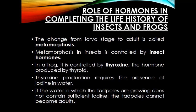As we studied in chapter 9, frogs undergo external fertilization, which requires water. Whenever a frog lays eggs and they need to be fertilized, the water should contain a sufficient amount of iodine so that the frog's thyroid can release thyroxine, because thyroxine production requires the presence of iodine. If the water in which the tadpoles are growing does not contain sufficient iodine, the tadpoles cannot become adults and the metamorphosis process will not occur, and the frog will eventually die.